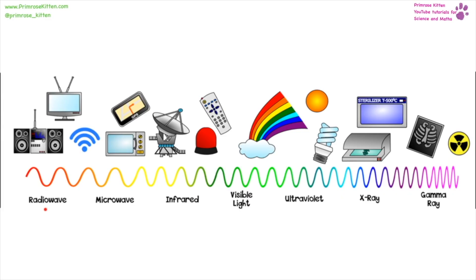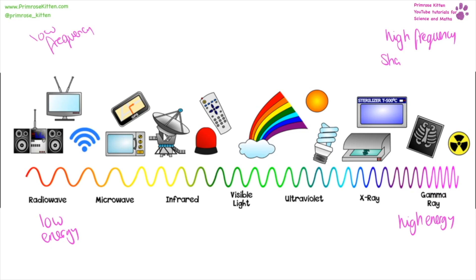Here we have the electromagnetic spectrum: radio waves, microwaves, infrared, visible light, ultraviolet, x-rays, and gamma rays. Gamma rays have high energy and high frequency with short wavelength; radio waves have low energy, low frequency, and long wavelength — wavelengths can stretch into meters or kilometers. Radio waves are used for communications; microwaves for mobile phones and heating food; infrared for remote controls and heat sensing; visible light for cameras and eyes; ultraviolet for detecting fake money; x-rays for bones; and gamma rays for treating cancers or sterilizing by killing bacteria.